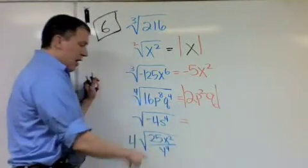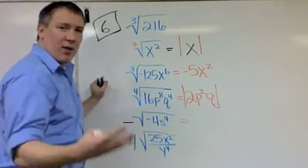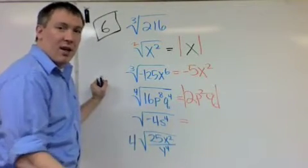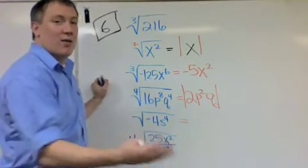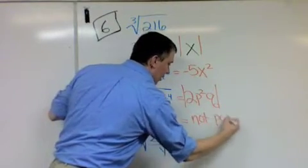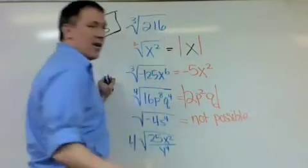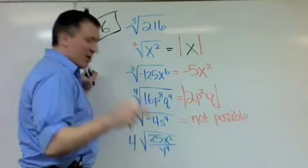This one right here, I cannot take the square root of a negative. No number times itself equals negative four. Negative two times negative two is positive four, not negative four. So this one is not possible. Can't take the even root of a negative until section 5.9. But we'll get there later.